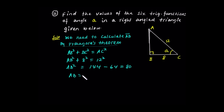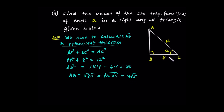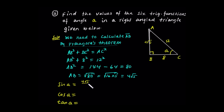AB equals the positive square root of 80, which equals √(16 × 5) = 4√5. So sine of A is opposite over hypotenuse = 4√5 over 12, simplified to √5 over 3.